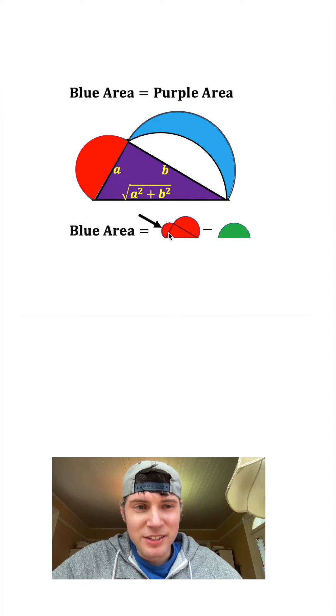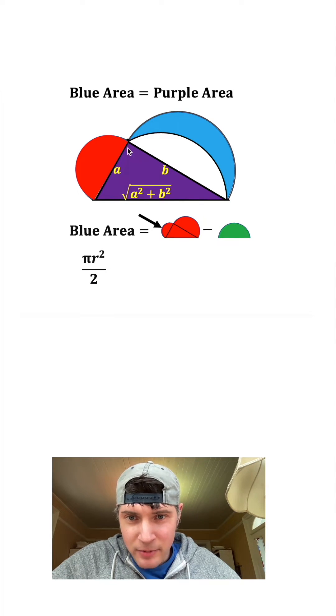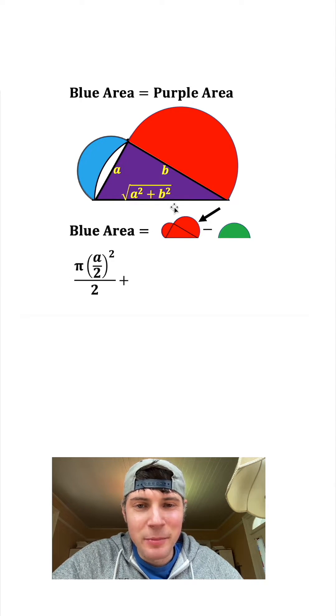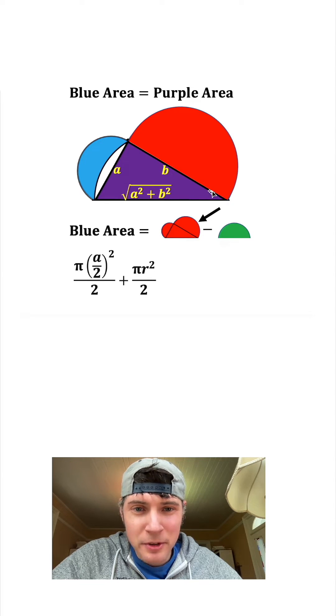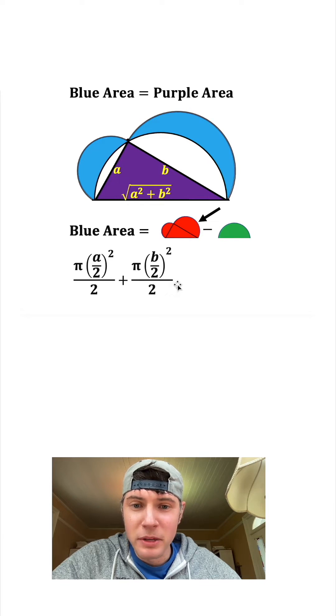So the area of this semicircle right here is going to be one half pi R squared and the whole diameter of the semicircle is A, so the radius would be half of A. Then we're going to add to it this semicircle right here and that's also going to be pi R squared over 2 and the whole diameter is B, so the radius would be half of B. So we're going to change this R into a B over 2.